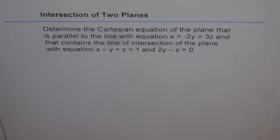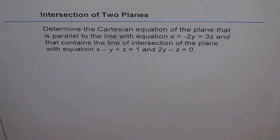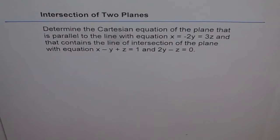Intersection of two planes. Determine the Cartesian equation of the plane that is parallel to the line with the equation x equals minus 2y equals 3z, and that contains the line of intersection of the plane with the equation x minus y plus z equals 1 and 2y minus z equals 0.